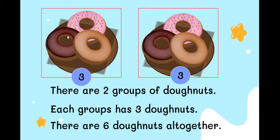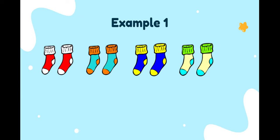So there are six donuts all together. You can count from the picture: three, four, five, six. Like that. So now let's start to make multiplication sentences. We count how many socks are there all together. Two plus two plus two plus two is equal to eight.